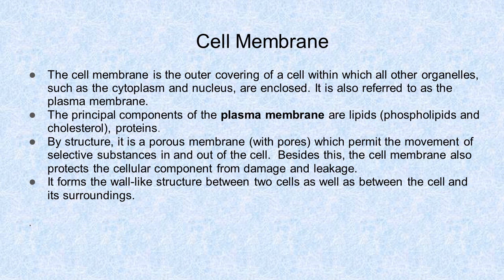By structure, it is a porous membrane which permits the movement of selective substances in and out of the cell. Besides this, the cell membrane also protects the cellular components from damage and leakage. It forms the wall-like structure between two cells as well as between the cell and its surroundings.